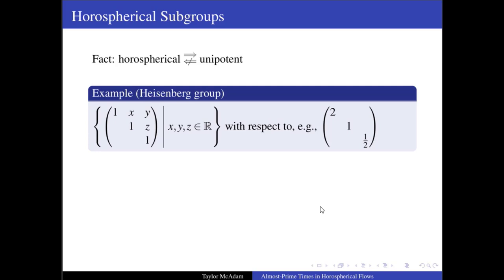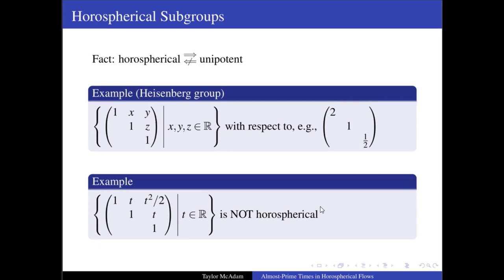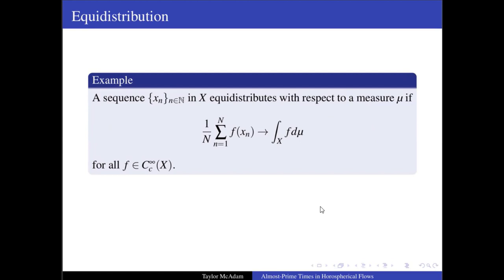A horospherical subgroup is always unipotent, but the converse is not always true. For example, the Heisenberg group is horospherical with respect to this element. But a subgroup of the Heisenberg group given by this is not horospherical because it is not precisely the set of elements that are contracted by any particular element of A. In general, a horospherical subgroup of SL(n,R) is one that is conjugate to a block upper triangular matrix.